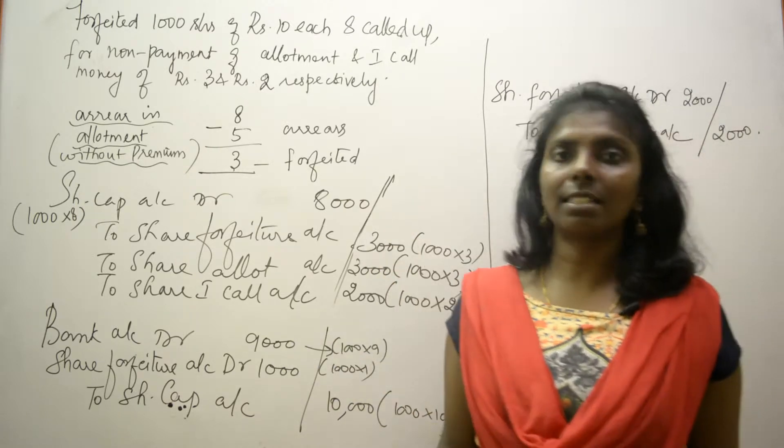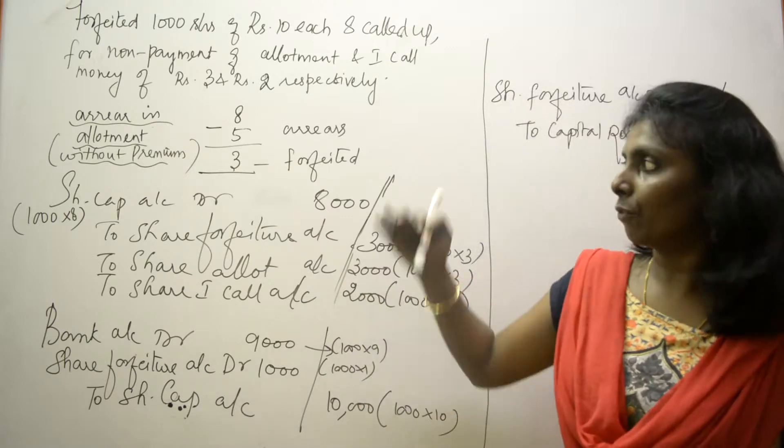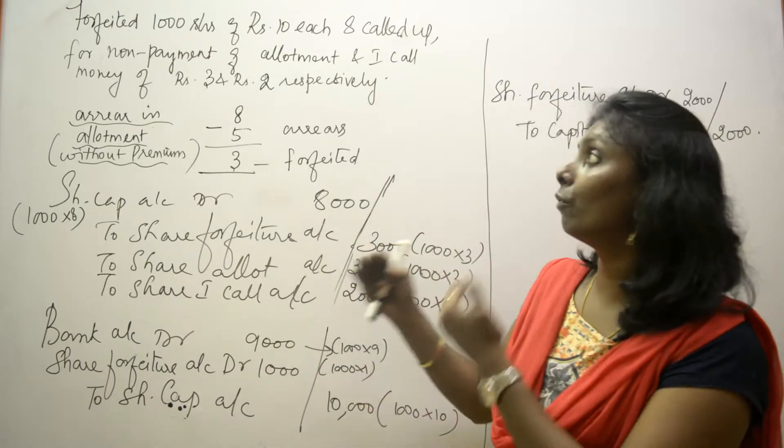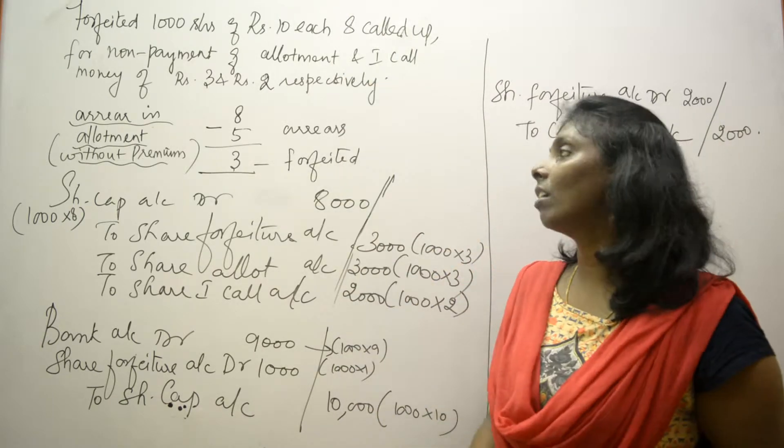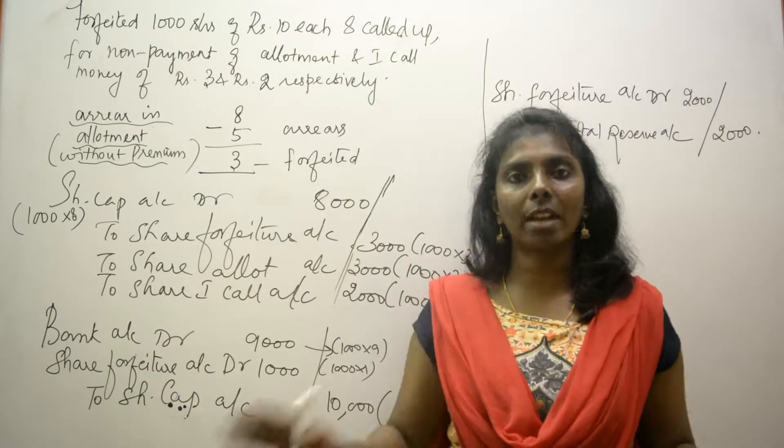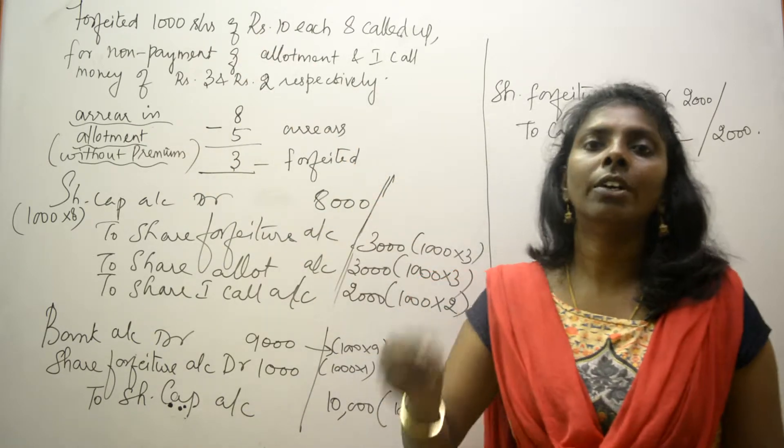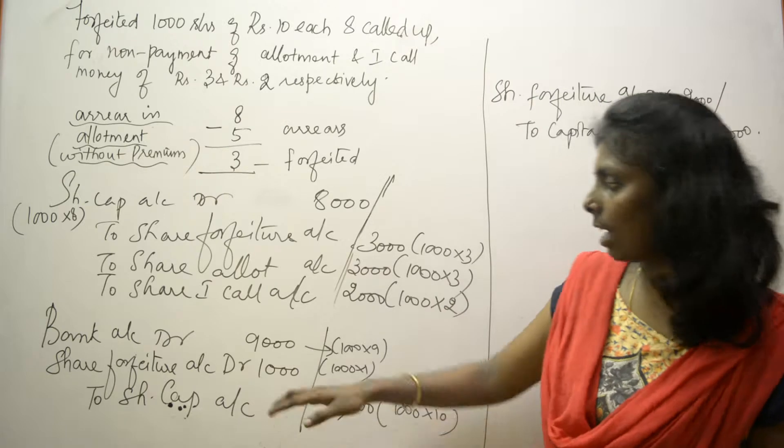It is not that, guys. Whenever you do a reissue, always compare your share value with the original value. Whether it's 8 called up or 7 called up or premium, don't worry about it. The original value of share is rupees 10, so a normal 10 rupee share is now reissued for 9, so obviously there is 1 rupee discount.